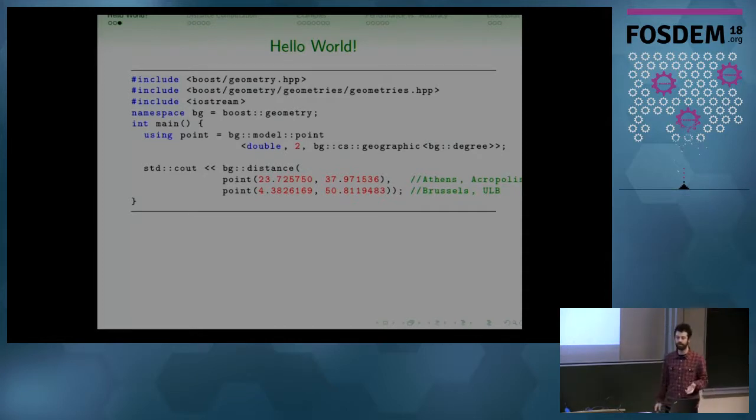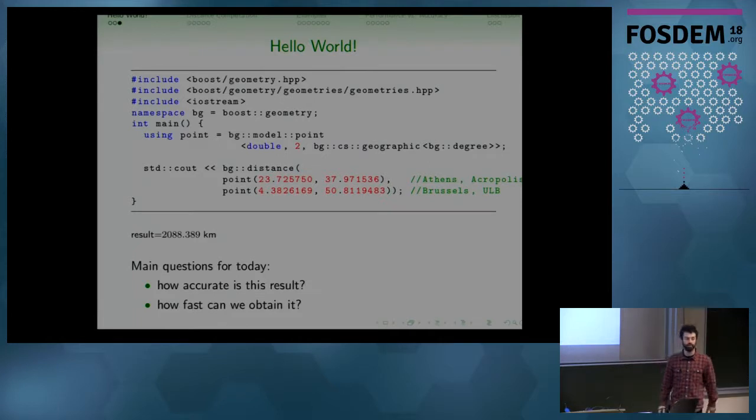Then we'd like to create two points with longitude latitude with degrees. The first will be in Acropolis, and the second one will be here. Then we'd like to compute the distance. The distance would be 2,000 plus something kilometers. And the main questions we would like to discuss today is how accurate is this result, and how fast can we obtain it.